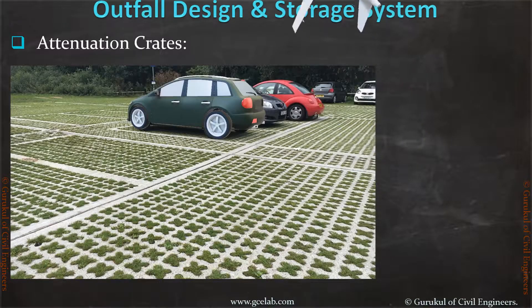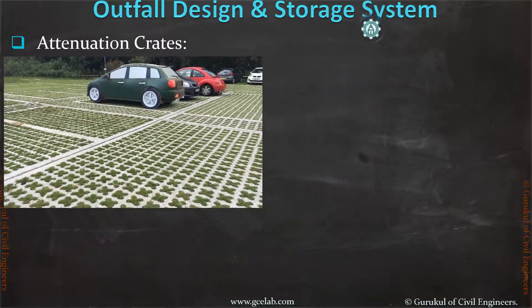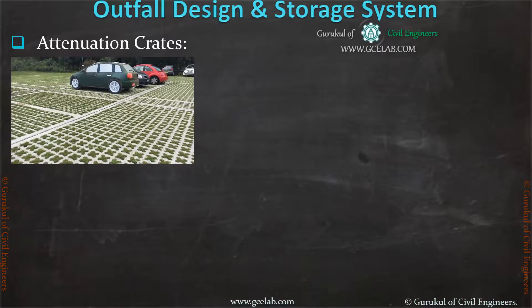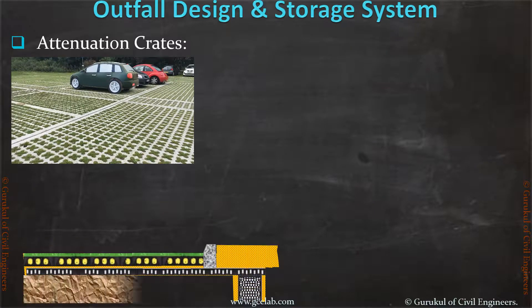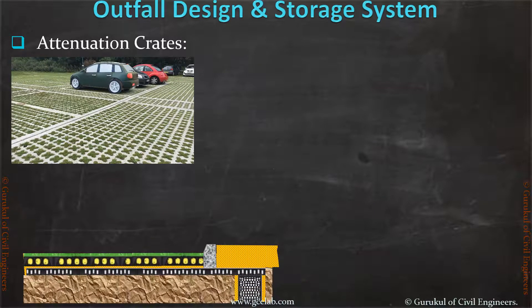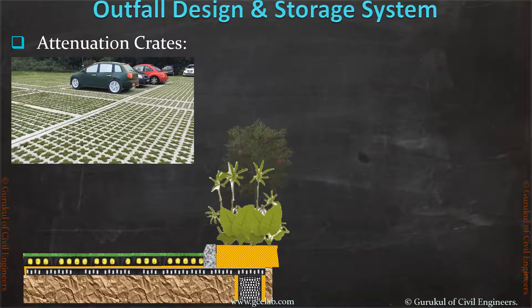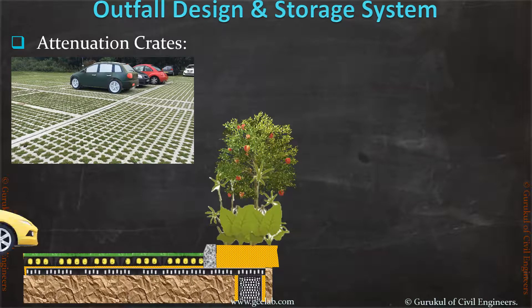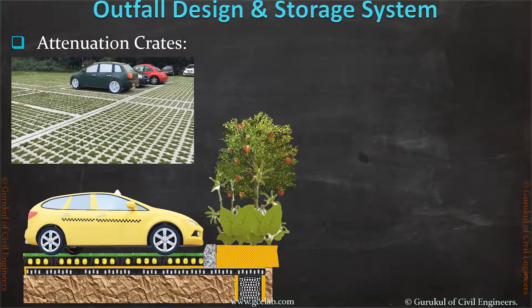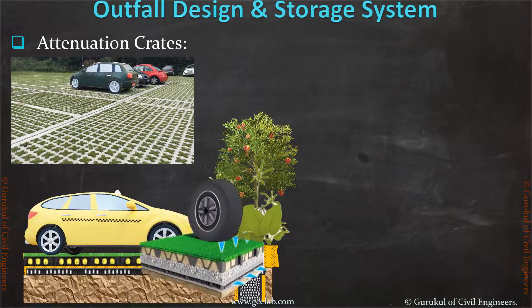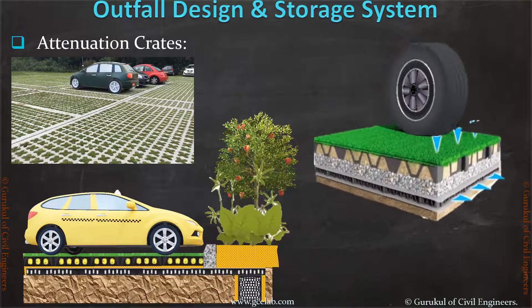Attenuation crates are an innovative attenuation system for car park areas. In this system, surface water is collected through paving blocks and drained out through nano-cells, and collected within the attenuation crates. It is then transferred to the outfalls with a flow control system.